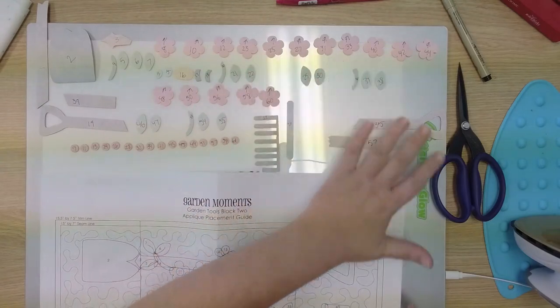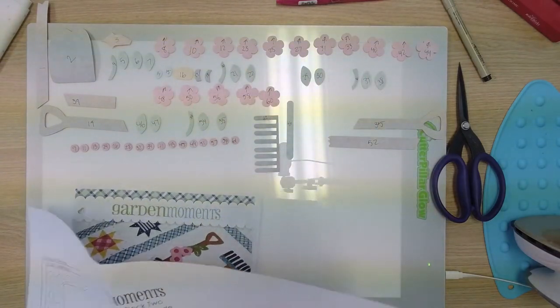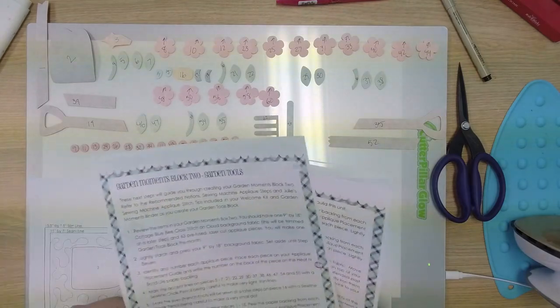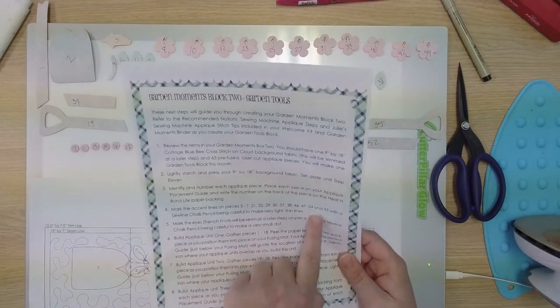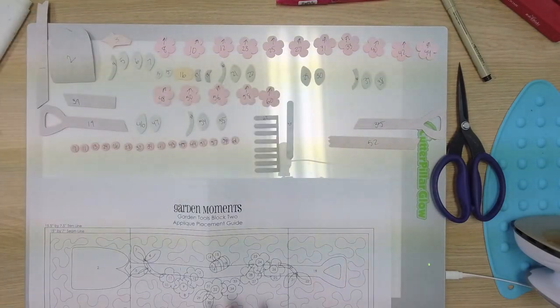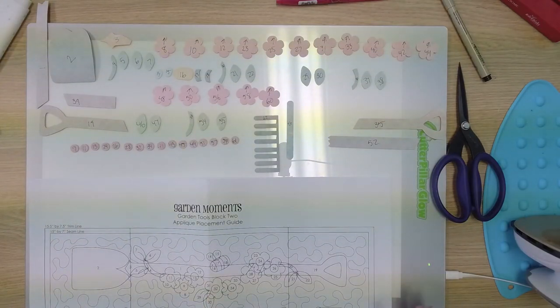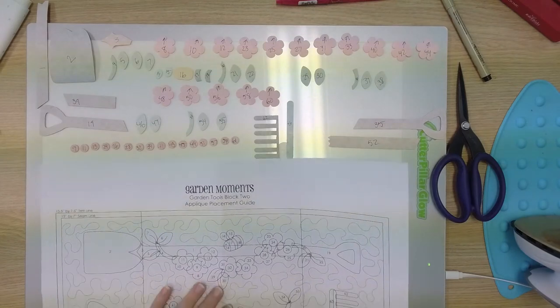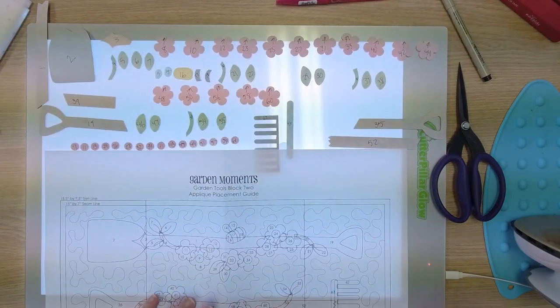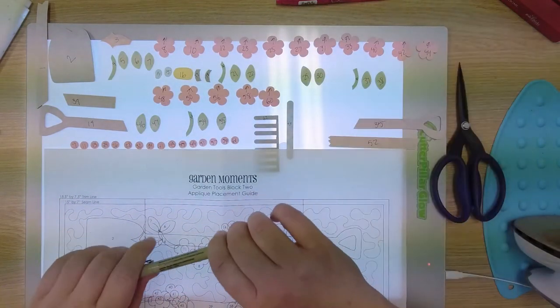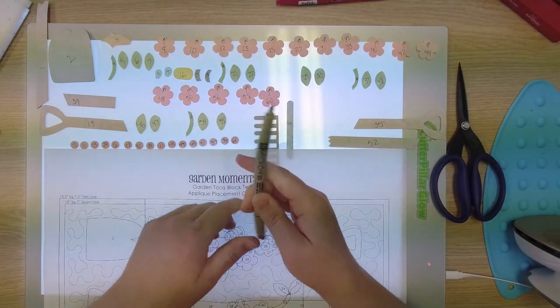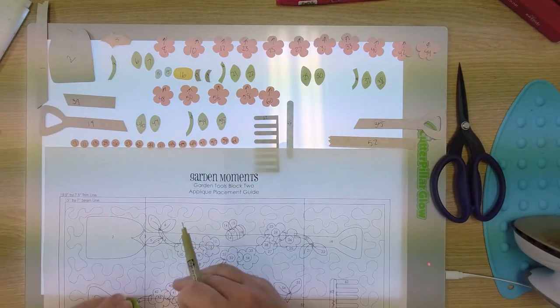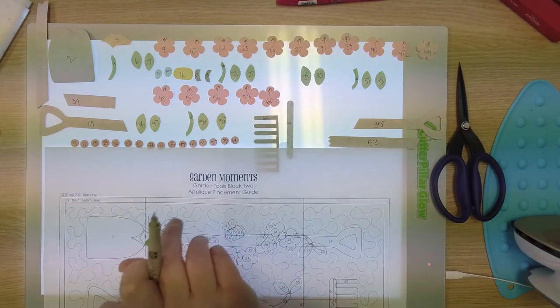Okay, so now what I've done is laid my pieces out. I have them all numbered. And now if you look in your pattern, what we're going to do next is mark our accent lines on our leaves. And we can mark where our little bumblebee eyeball goes. So I'm just going to turn my light pad on a little bit, grab my micron pen, and I'm going to just take my leaves.